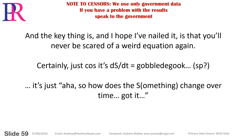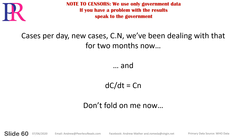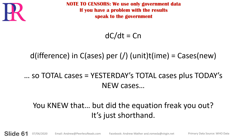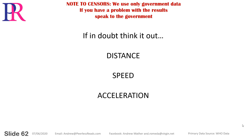And the key thing is that you'll never be scared of a weird equation again — certainly not just because it's DS by DT equals gobbledygook. It's just: how does the S-something change over time? Cases per day, new cases — C dot N. We've been dealing with that for two months now. DC by DT equals CN — the difference in cases per unit time is the new cases. Total cases equals yesterday's total cases plus today's new cases. You knew that. But did the equation freak you out? It's just shorthand. If in doubt, think it out.